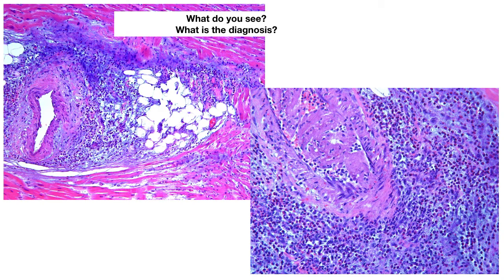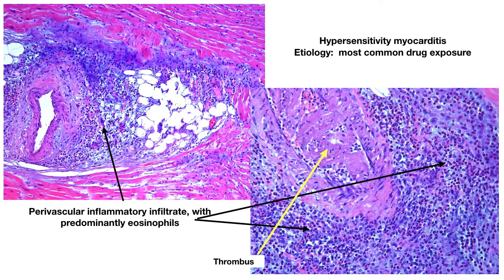This is a hypersensitivity myocarditis, and the most common etiology is drug exposure. On the left, a low-power view shows the characteristic perivascular distribution of the inflammatory infiltrate. On the right, a closer view shows the little red dots — the eosinophils. Also visible within the vessel on the right is thrombus formation. Hypersensitivity myocarditis can be very variable; it may be an incidental finding, but it is also possible for it to trigger ischemic injury, infarction, and potentially death.